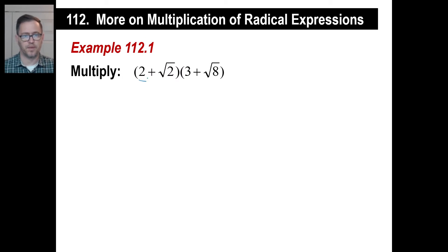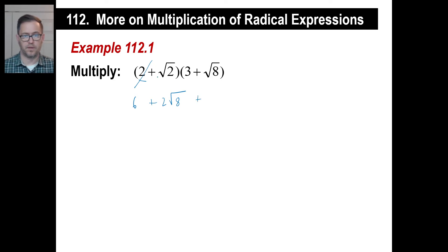We'll start with the 2. So 2 times 3 will be 6. And 2 times the square root of 8 will be 2 square root of 8. Then we have the square root of 2 times 3, which will be 3 square root of 2. Then we have the square root of 2 times the square root of 8, which is the square root of 16.